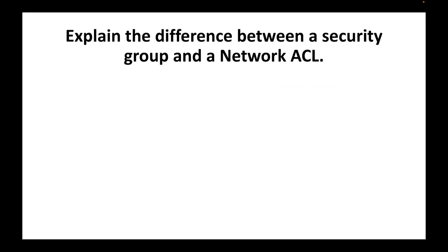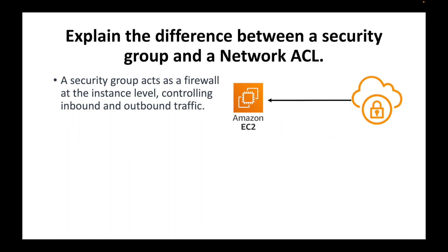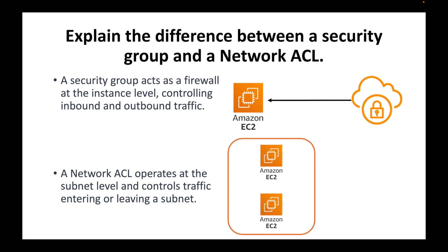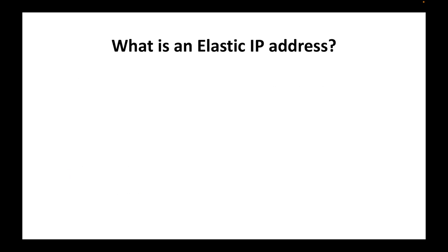The next question is: explain the difference between a security group and a NACL. Both security groups and Network ACLs are firewalls used to control inbound and outbound traffic. However, a security group acts as a firewall at the instance level — you attach it to each instance individually. A NACL, on the other hand, operates at the subnet level, so it applies to all instances running within that subnet.